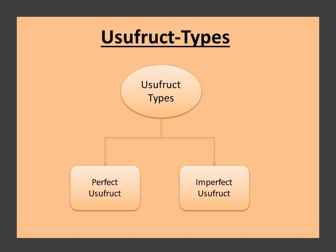To terminate the usufruct, the owners can agree to pay an annuity to the usufructuary. Lastly, a usufructuary can abandon the right of usufruct by signing an appropriate document to that effect.